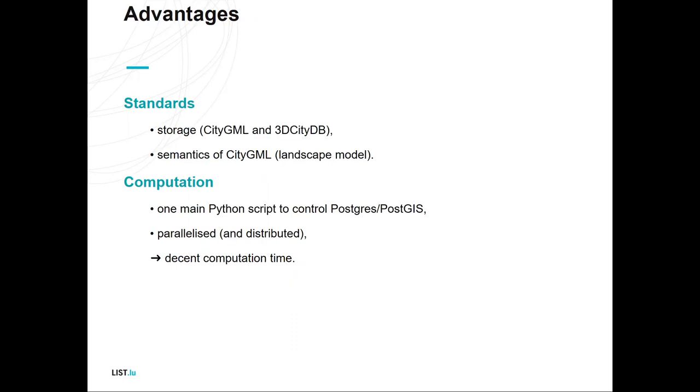Some advantages. We rely on standardized storage in CityGML or 3D CityDB, so you can export from 3D CityDB to CityGML again, which makes it a standardized export form to export your results. We also keep the semantics of CityGML inside 3D CityDB, also quite useful. It's one main Python script which controls the parallelization of the whole approach, which generates and sends queries to Postgres. Results are still stored in Postgres. It's parallelized, and this leads to a decent, I mean 15 days sounds a lot, but it's also a massive amount of data and calculation steps you have to take. That's the heavy lifting of the computation.